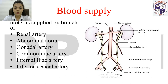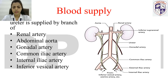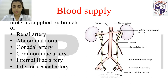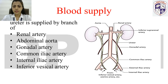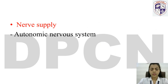The ureter is supplied by branches of several arteries: the renal artery, abdominal aorta, gonadal artery, common iliac artery, internal iliac artery, and inferior vesical artery. The nerve supply of the ureter is by the autonomic nervous system.